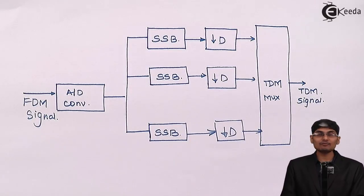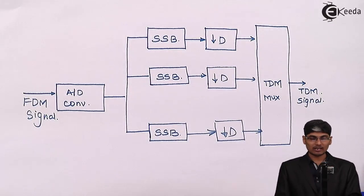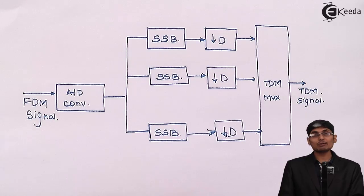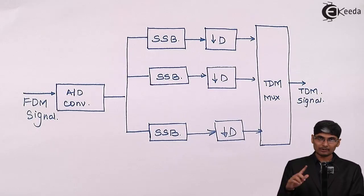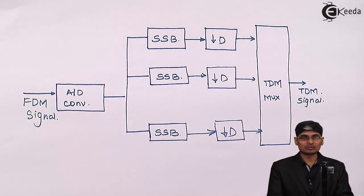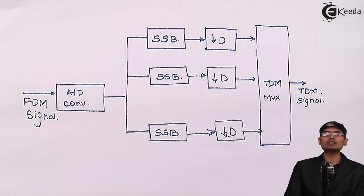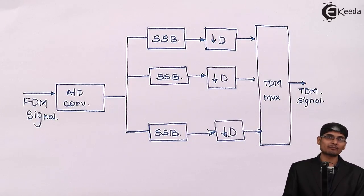Here the reason for selecting 12, the value of D, is because individual channel which is 4 kilohertz is being sampled at Nyquist rate which gives me an overall value of 8 kilohertz.